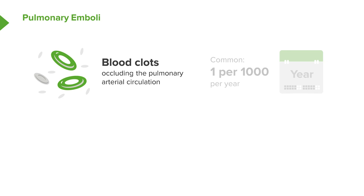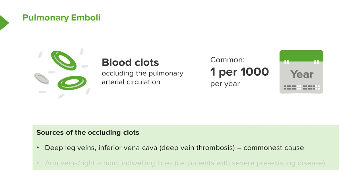Moving on to the first of these diseases: pulmonary emboli. These are blood clots occluding the pulmonary arterial circulation. They're very common, one per thousand per year, and where they come from is generally speaking the distal deep leg veins.